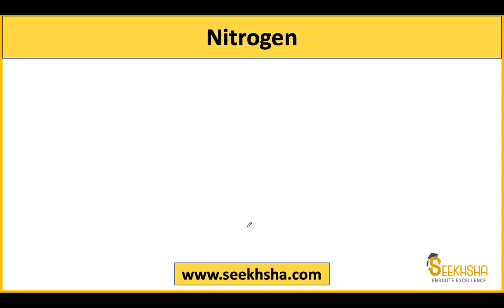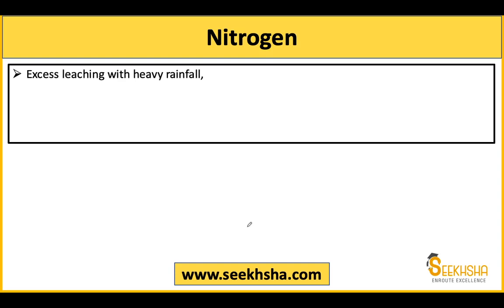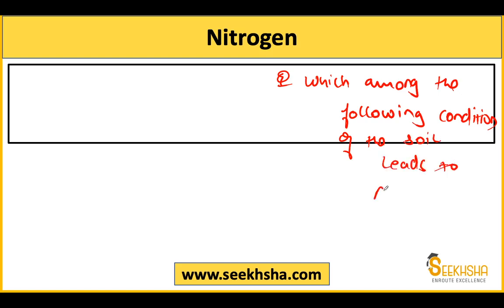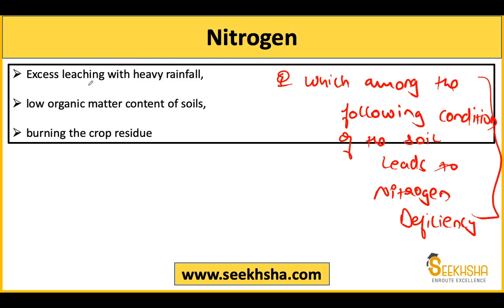Let's proceed ahead now and start. First of all, let's talk about nitrogen deficiency. The question is: which among the following conditions of the soil leads to nitrogen deficiency? There are three main reasons. First, if there is heavy rainfall or uncontrolled irrigation, it leads to leaching in the soil, and nitrogen-like nutrients leak out. Second, if the soil has a very low organic matter content.